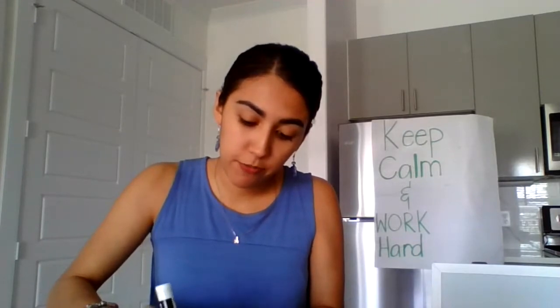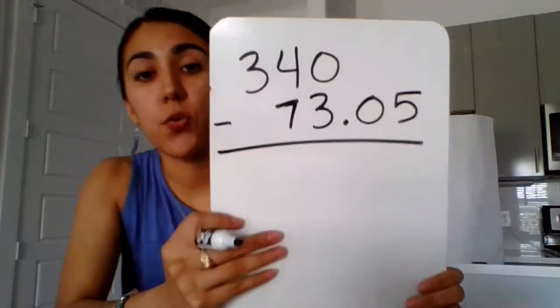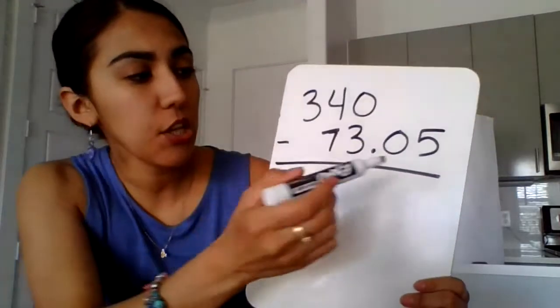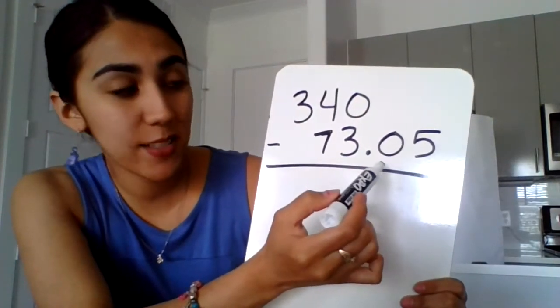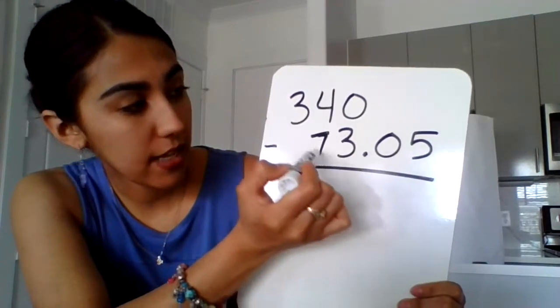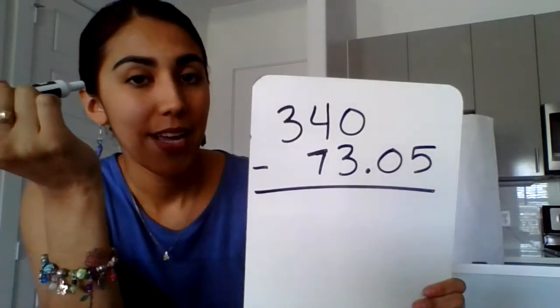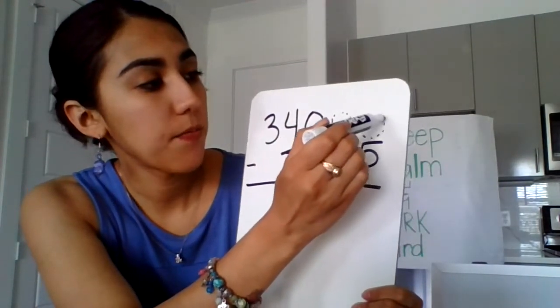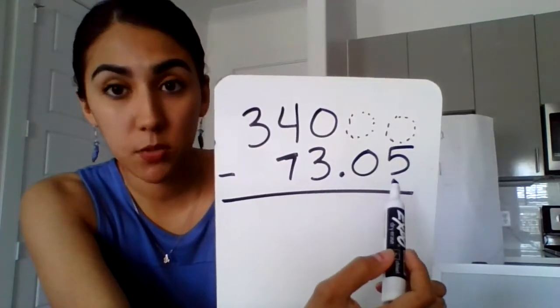Remember, the bigger number always goes on top, so I'm going to do 340 minus 73.05, and I'm going to show you what it looks like. Make sure you line up your numbers by place value. So when you line up your numbers by place value, this is what it's going to look like. You have the hundredths place, tenths place, ones, tens, hundreds. Now, I'm going to need some placeholder zeros right here. Because these numbers need something to subtract from.